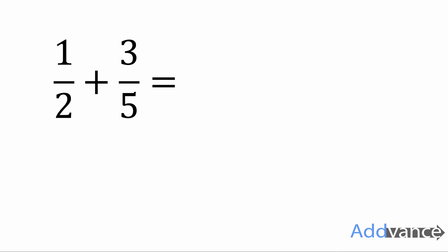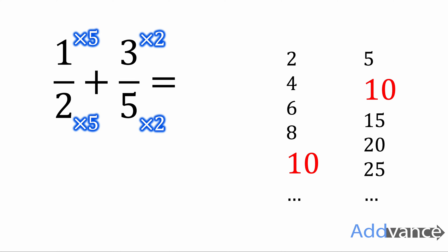To add these fractions together we first need to write them with a common denominator. The least common multiple of 2 and 5 is 10. So we can rewrite each fraction with a denominator of 10.